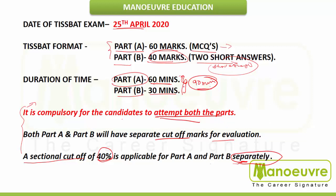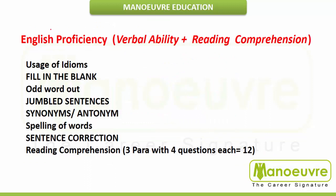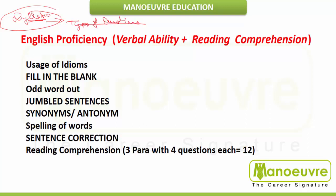Syllabus awareness is the first stepping stone of any preparation strategy. The syllabus — that is, the types of questions — has to be very clear. For example, you may have studied grammar and idioms, but you need to know what types of idioms have been asked in previous papers. Awareness of the syllabus and the right knowledge of question types can fetch you almost 20 to 25 percent more marks in your examinations.